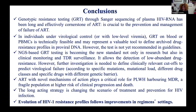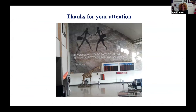In conclusion: genotypic resistance testing remains the cornerstone, based on plasma HIV RNA, for prevention and management of antiretroviral therapy failure. In individuals under virological control or with low-level viremia, HIV DNA genotypic resistance testing is feasible and can be a valuable tool, though not yet routinely recommended as guidelines await clearer understanding of clinical significance. ART with novel mechanisms of action plays a critical role for people with multi-drug resistance — a fragile, high-risk population. Long-acting strategies are changing the treatment and prevention landscape, and we must follow the evolution of HIV resistance profiles.